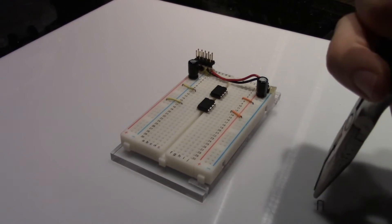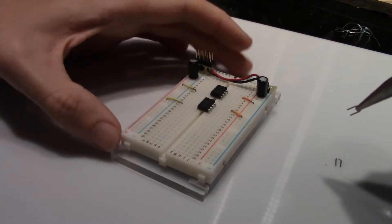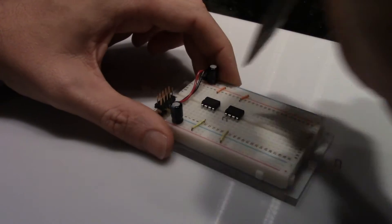The unity gain followers are next. Add jumpers between the output and negative inputs on the left op amp on both chips.